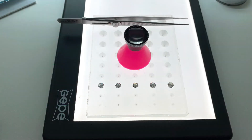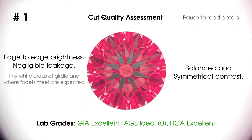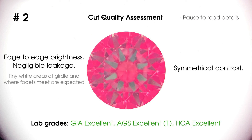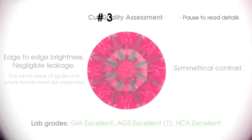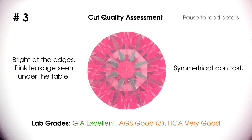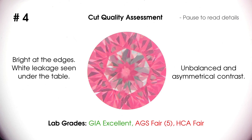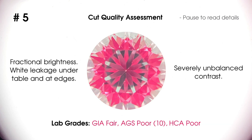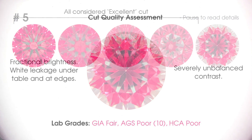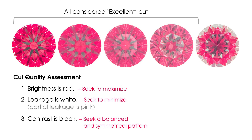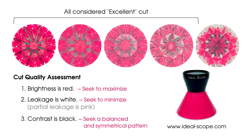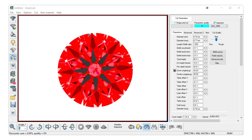In closing, we'll show you photos of 5 examples, ranked 1 to 5 from best to worst. It should be useful to know the first 4 all qualify for the excellent cut grade. With IdealScope analysis, you can easily tell which are reliably bright and dynamic and which suffer from leakage and brightness reduction. Your jeweler can purchase one at IdealScope.com, or generate an IdealScope image with a 3D scan using DiamCalc software.